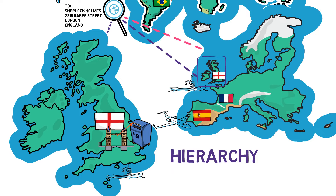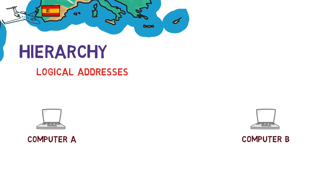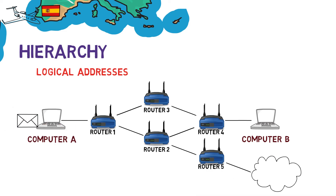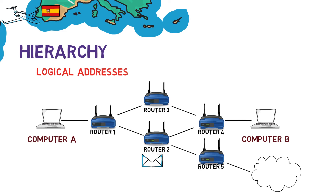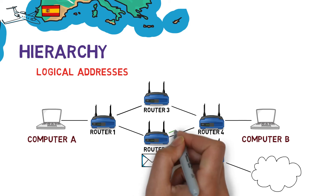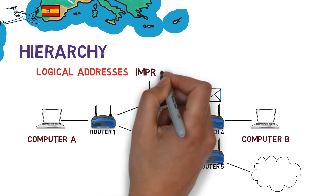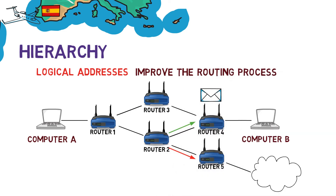The same applies to logical addresses in computer networks — a logical address can also convey hierarchy. In the third layer, we use devices called routers that are aware of these logical addresses. So if computer A sends a message to computer B, router 1 can look at it and say: this address is in Europe, and I know router 2 is the fitting one to send it to Europe. Router 1 doesn't have to know the specific address of B beforehand, but rather understand its general direction. Router 2 will then look at the destination address and understand the general direction of the packet, forwarding it to router 4. The main reason for having logical addresses is that it improves the routing process — defining the path that the packet will travel.